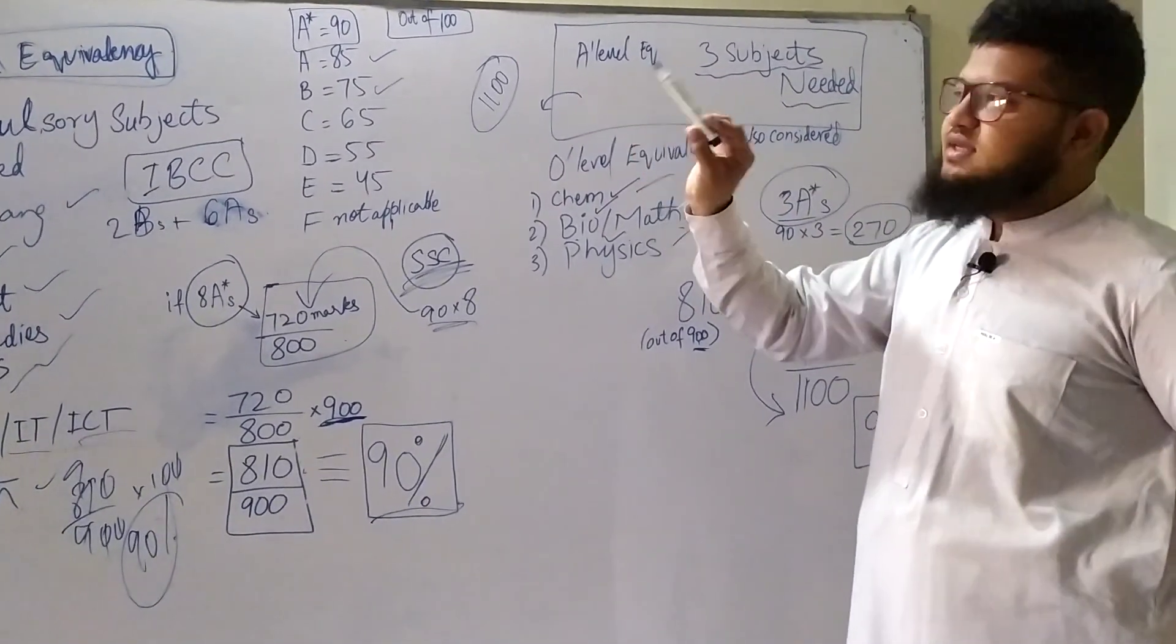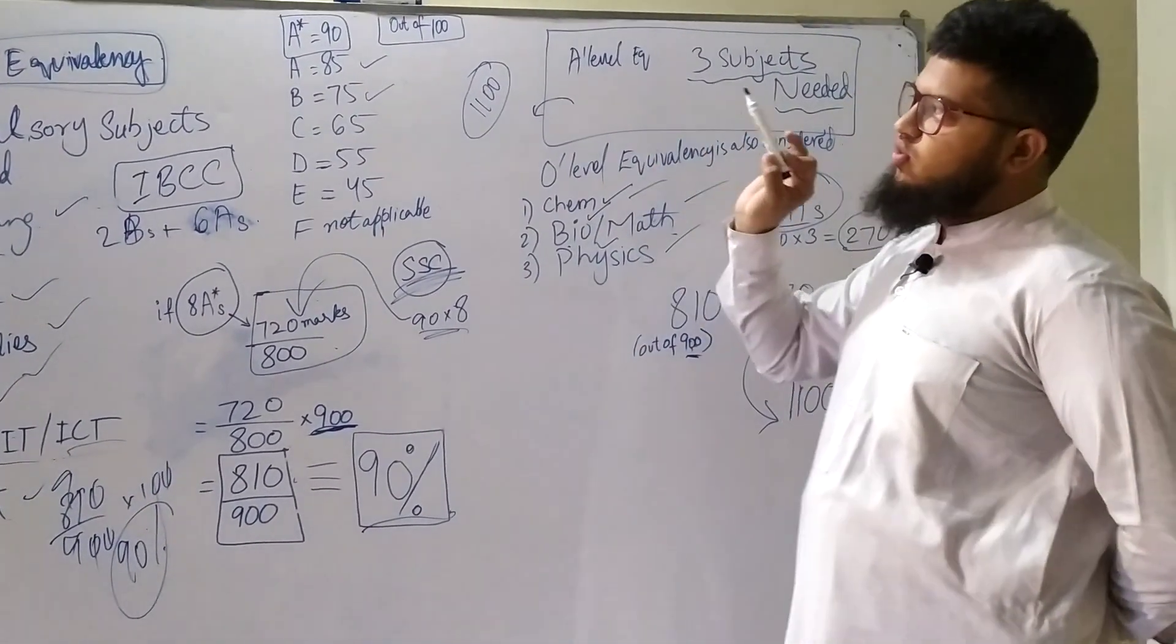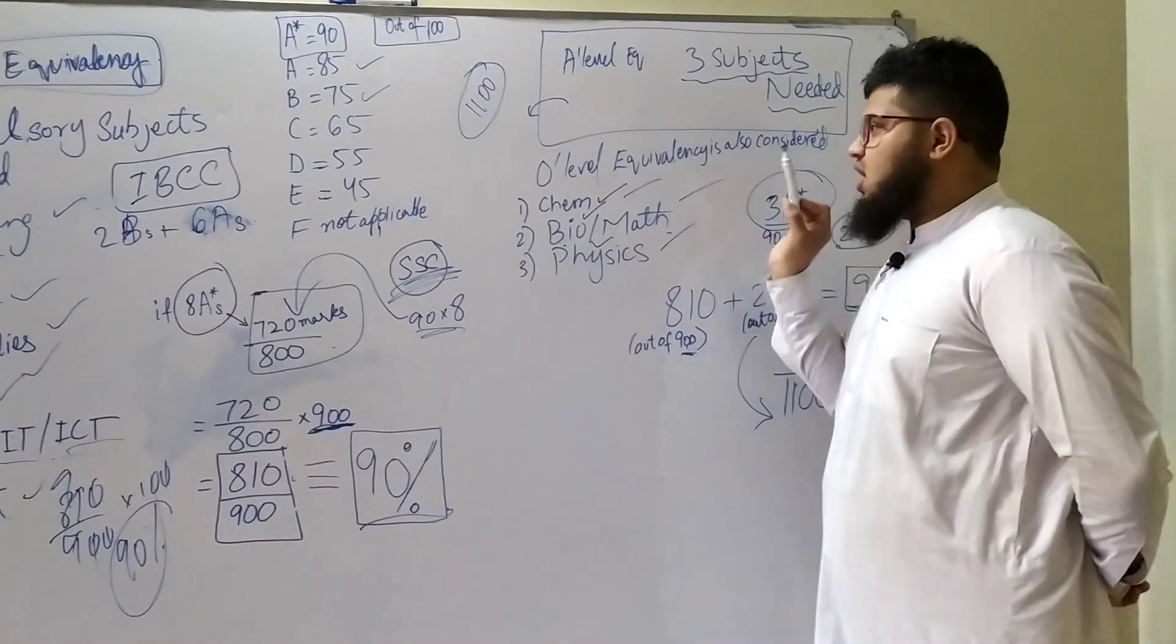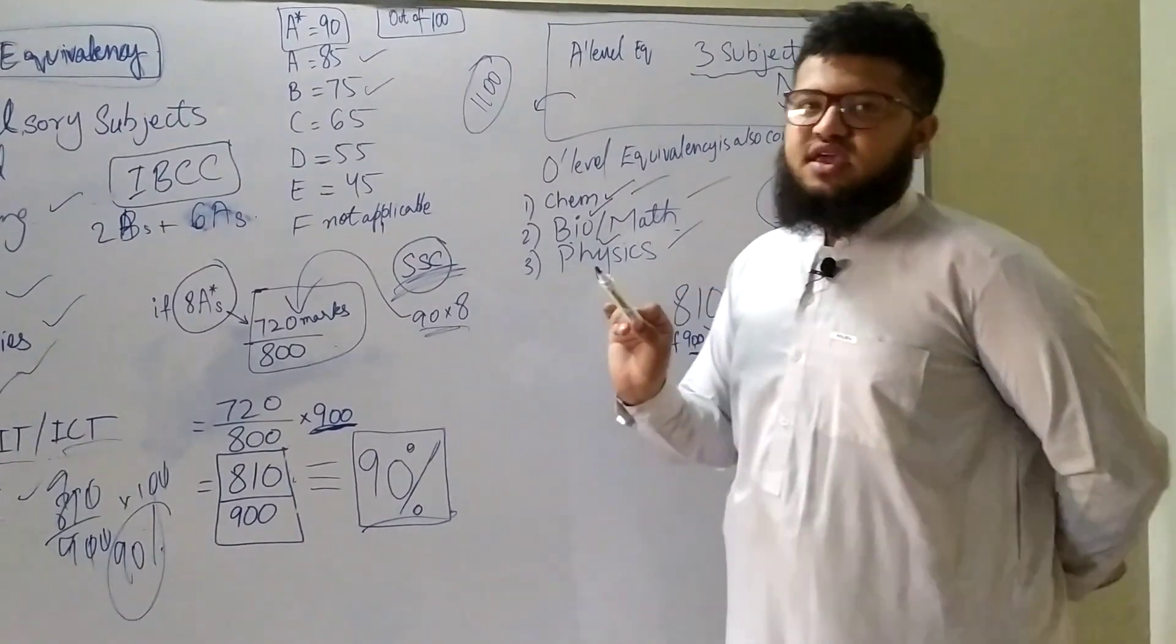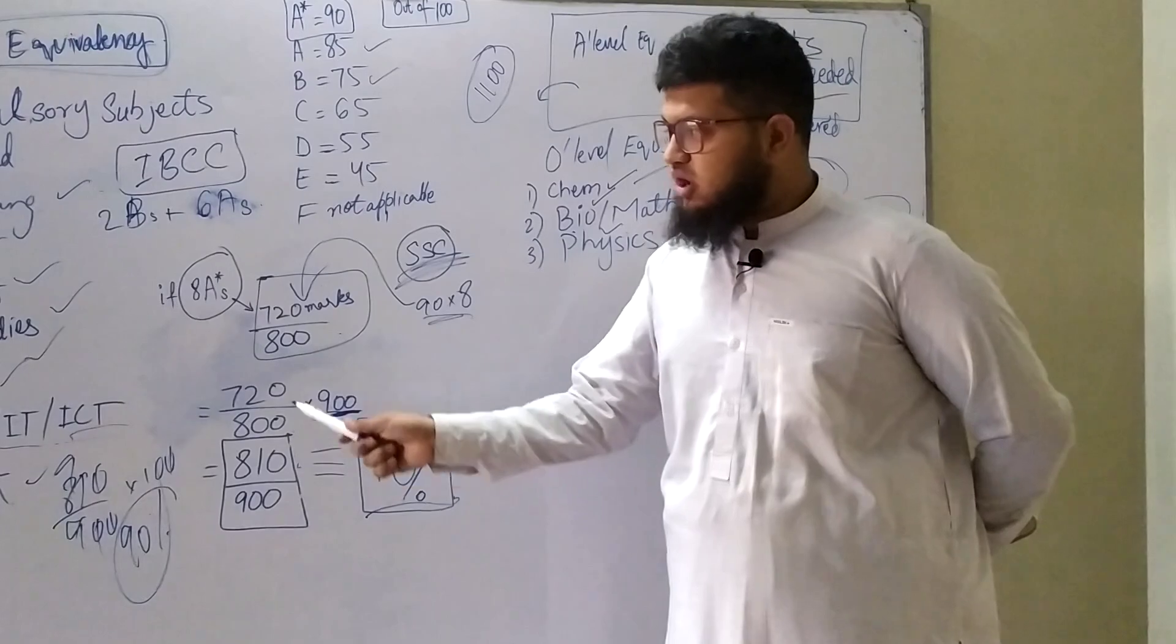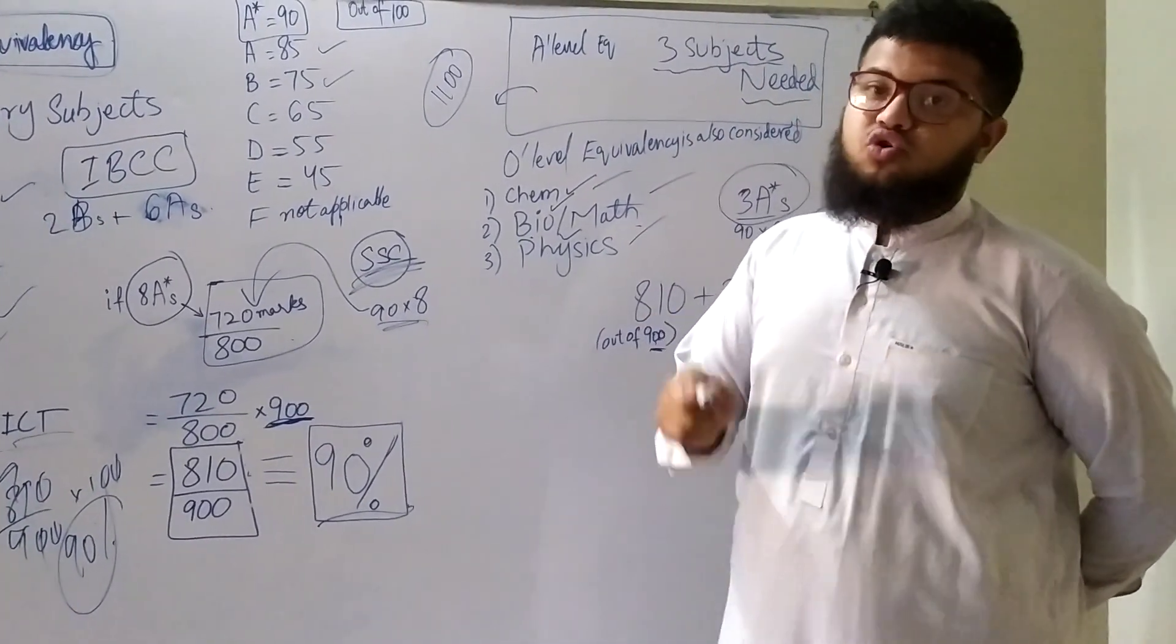Now guys, the scale is the same: A star gives you 90, A gives you 85, and so on. But guys, here in A-levels, one shocking fact is that in A-level equivalency, O-level equivalency is also included.